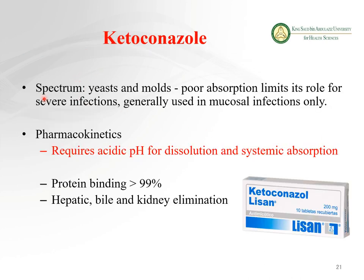Ketoconazole: its spectrum covers yeasts and molds. Absorption limits its role to severe infections, and it is generally used in mucosal infections only. For pharmacokinetics, it requires acidic pH for dissolution and systemic absorption, so drugs that decrease gastric acidity like antacids will reduce its absorption. It is a highly protein-bound drug and is secreted through bile or the kidney.